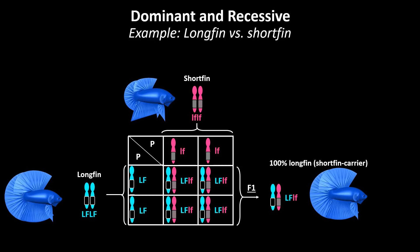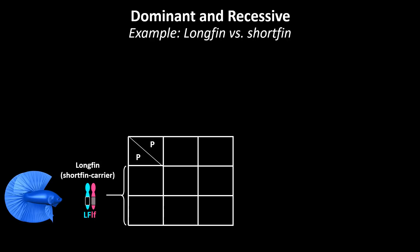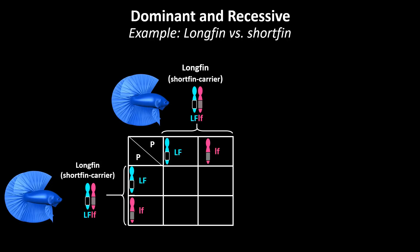In the first generation F1, we can see that all the offspring have inherited one copy of the dominant long fin trait and one copy of the recessive short fin trait. This means that the phenotype will be long fin, but genetically this fish will be a carrier of short fin. For the second generation F2, we will cross two long finned fish from the first generation which both are carriers of short fin. The offspring can inherit either the dominant long fin trait or the recessive short fin trait from each parent, and by using this diagram we can visualize what possible combinations can pop up from this cross.